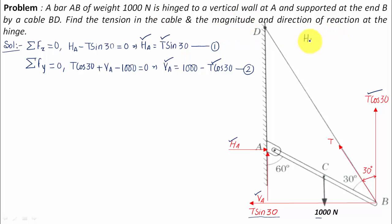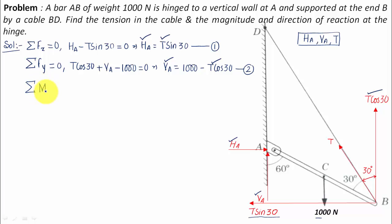We have three unknowns: HA, VA, and the tension T in cable BD. To solve for three unknowns we need three equations. We've written down equations one and two, so we now go ahead and write down the third equation of equilibrium — summation of moments of all forces about a certain point equals zero. We will select point A as that point.